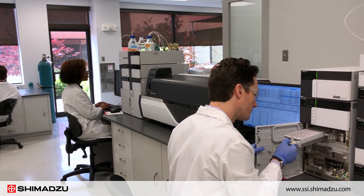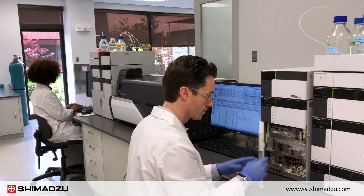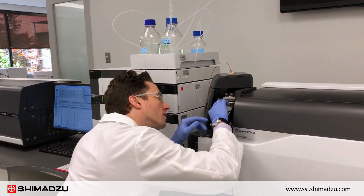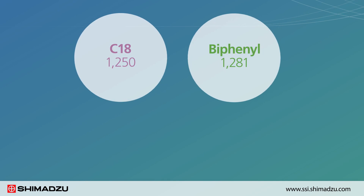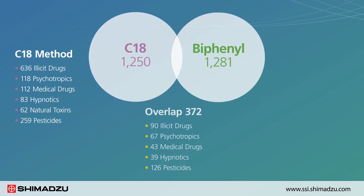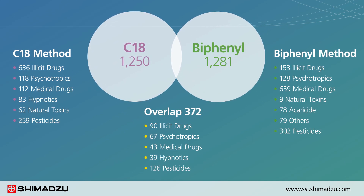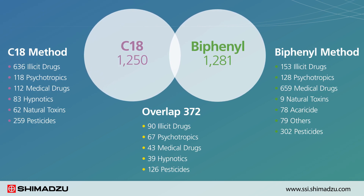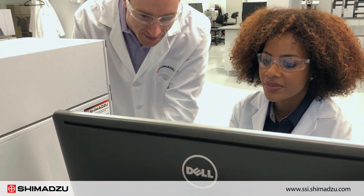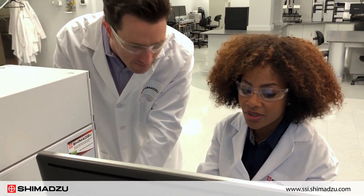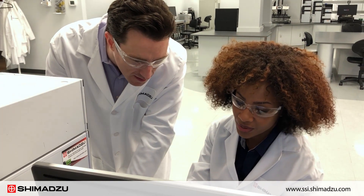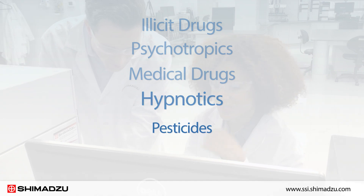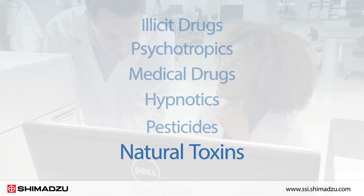Shimadzu's forensic toxicology database is equipped to meet your unique application needs. It is built for two separation conditions: C18 and biphenyl. The C18 method delivers information on 1250 compounds, and the biphenyl method provides information for 1281 compounds. Together, these two methods contain all the compounds available for forensic toxicology analysis, including illicit drugs, psychotropics, medical drugs, hypnotics, pesticides, and natural toxins.